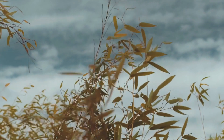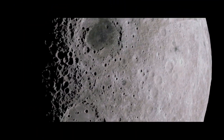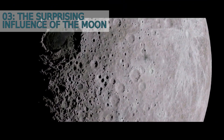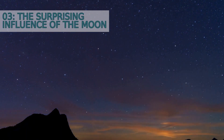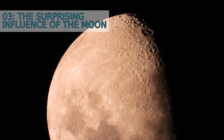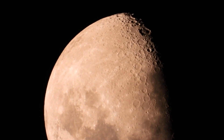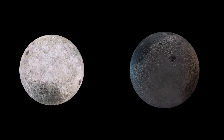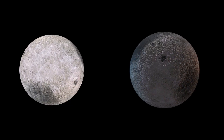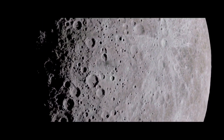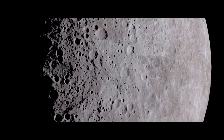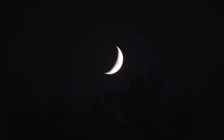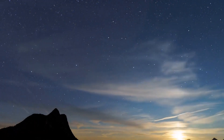Number three: the surprising influence of the moon. It's no secret that the moon has a significant impact on our oceans, with its gravitational pull causing the tides to rise and fall. But did you know that it also plays a role in wave formation? The moon's gravitational pull on the ocean creates bulges in the water, causing it to move in circular patterns.